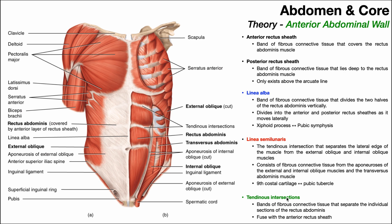Finally, we have the tendinous intersections. The rectus abdominis muscle is segmented, with individual segments whose muscle fibers run vertically, each separated by fibrous connective tissue called the tendinous intersection. These separate the individual sections or segments of the rectus abdominis muscle. Importantly, these tendinous intersections also fuse with the anterior rectus sheath — the fibers of each tendinous intersection blend with the portion of the anterior rectus sheath superficially.